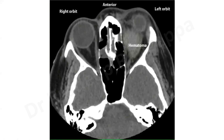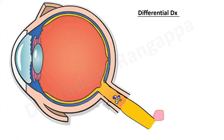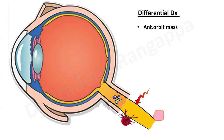The differential diagnoses for increased optic nerve sheath diameter include: raised ICP from trauma, optic neuritis, arachnoid cyst of the optic nerve, trauma to the optic nerve, meningioma, or any mass lesion within the orbit — anterior orbit mass or cavernous sinus mass — all of which can increase pressure and increase the optic nerve sheath diameter.